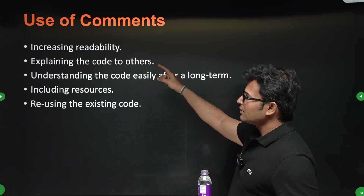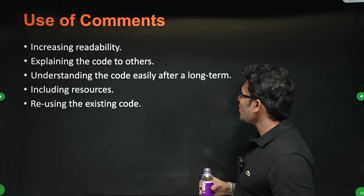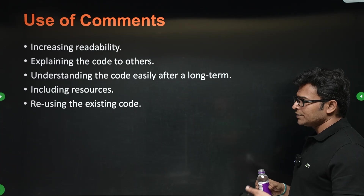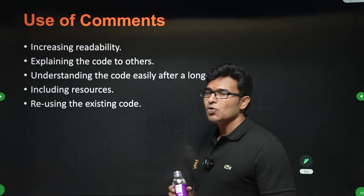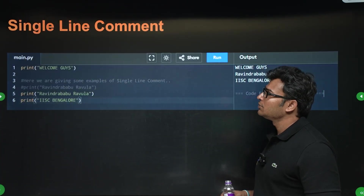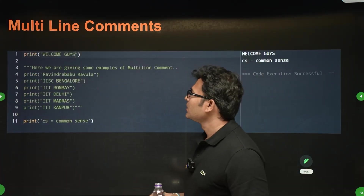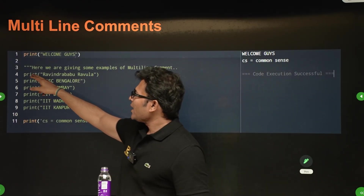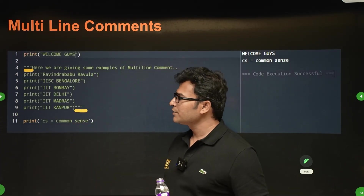The uses of comments are: it increases readability, explaining the code to others is easy, understanding the code easily after a long time is easy, onboarding new team members is easier, and reusing existing code is also helped by comments. Single-line comments start with a hash. Multi-line comments start and end with either three single quotes or three double quotes — you can have multiple lines inside.